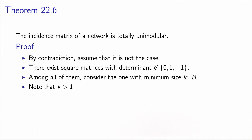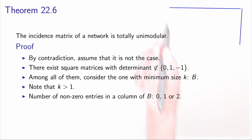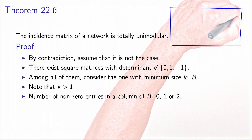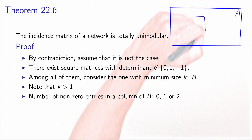We know that k is strictly greater than 1, because all the entries of this matrix are 0, 1, and minus 1. So if there is a square matrix with a determinant different from these values, its size must be at least 2. Let's look at this matrix B, which is the smallest square sub-matrix which does not verify the property.